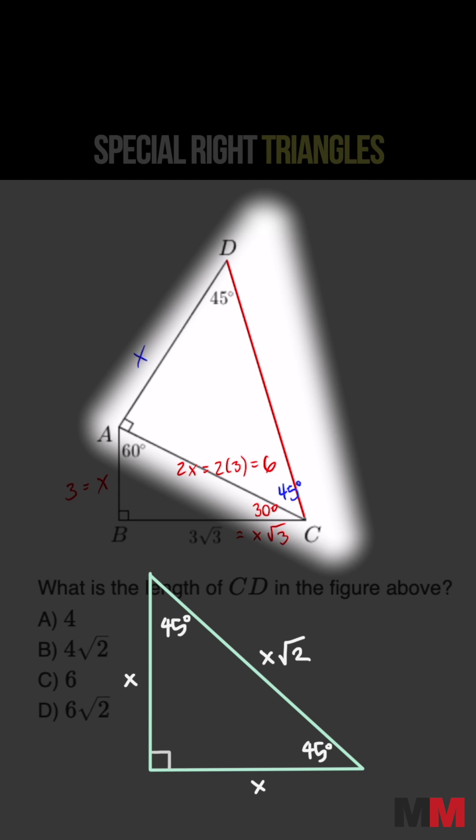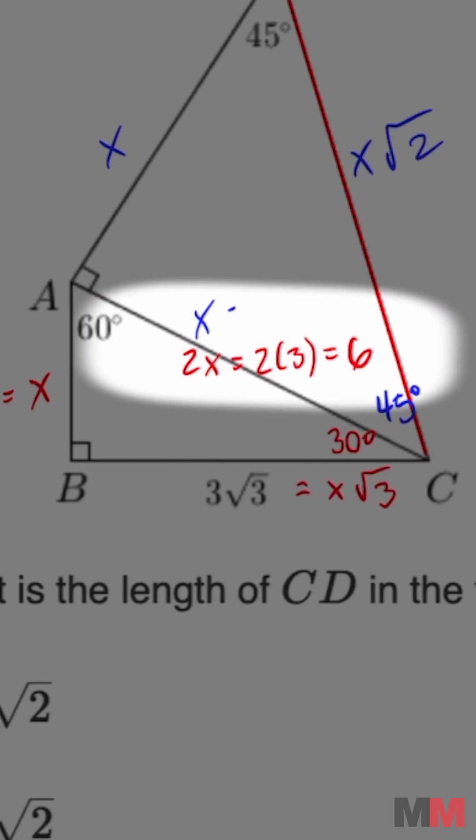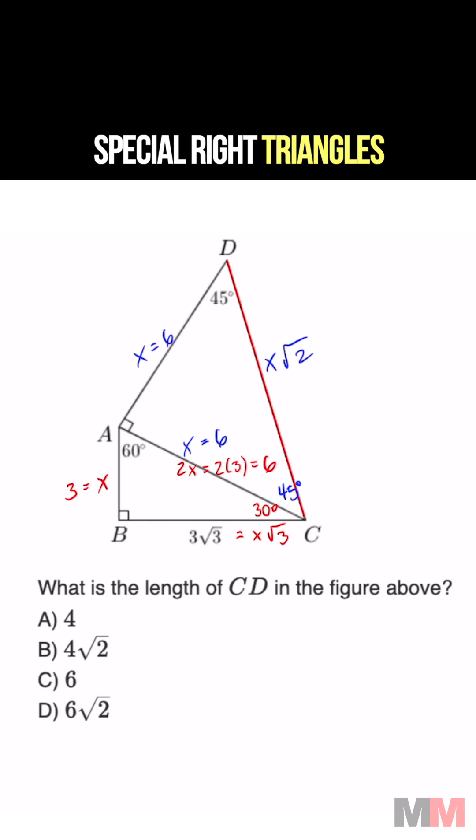And in a 45, 45, 90, if this is X and this is X, then CD is going to be X root 2. But we know that this line segment equals 6 for that triangle, meaning that CD has to be 6 root 2, letter choice D, peace.